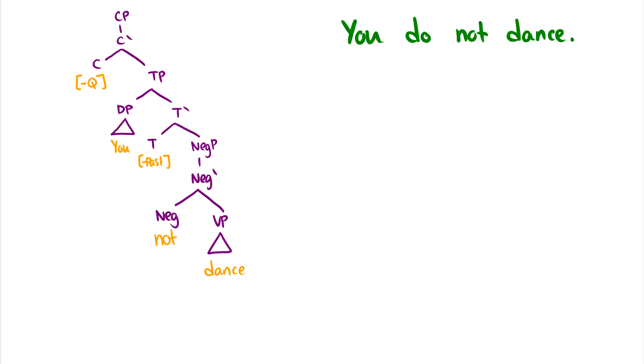So you not dance. And I want to say you do not dance. So what should happen is this tense moves down to dance. But the problem is that T, or tense in T, cannot make it past negation. Negation is like this shield that prevents anything in T to move down to the VP.